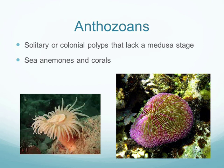Anthozoans include corals and sea anemones. They can be solitary or colonial polyps — most corals are colonies of polyps living on a skeletal structure. The mushroom coral is an unusual example of a single-polyp coral. Anthozoans lack the medusa stage entirely, remaining in the polyp phase for their entire life.